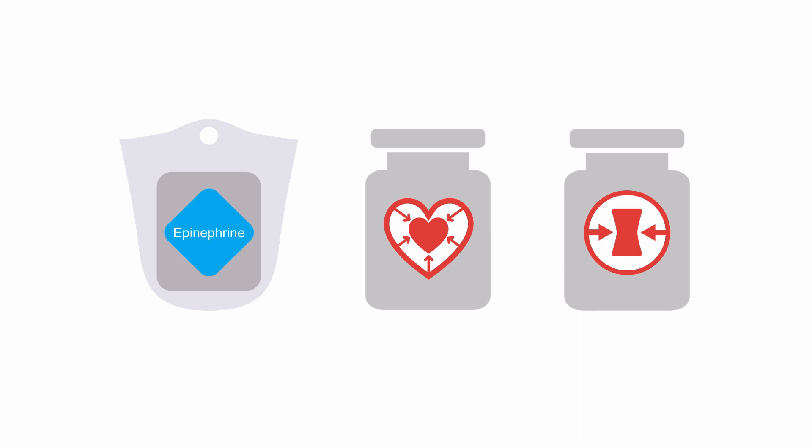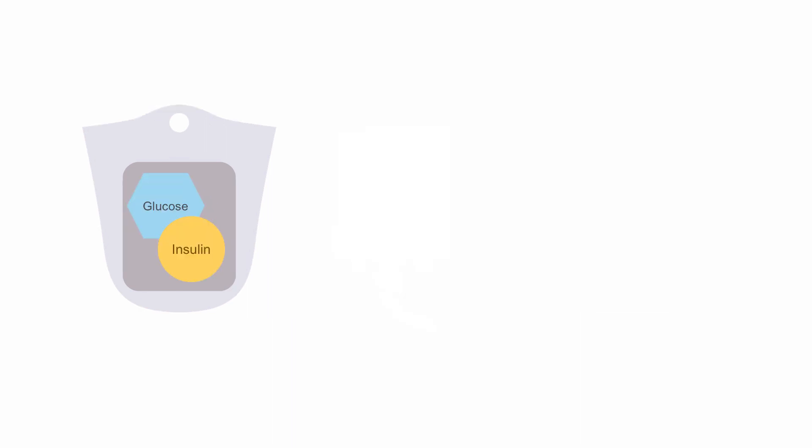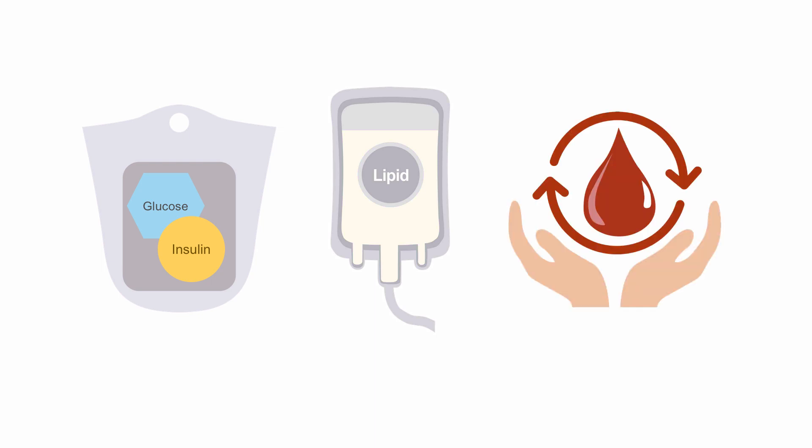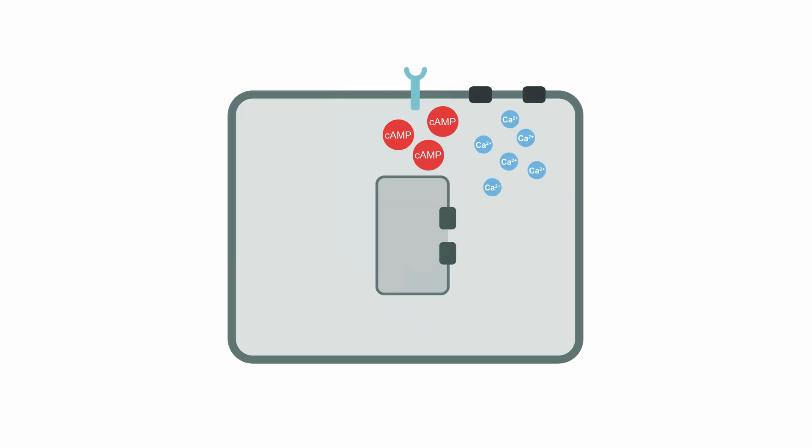For refractory cases, high dose insulin and glucose infusion or intravenous lipid emulsion may be considered, and ultimately mechanical circulatory support may be considered for recoverable cases. Beta blockers on the myocyte block the influx of calcium through the calcium channel but also block the increase in intracellular cyclic AMP.